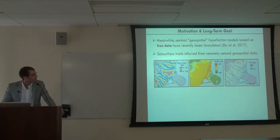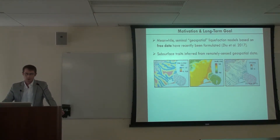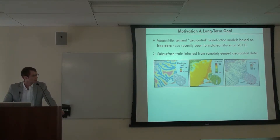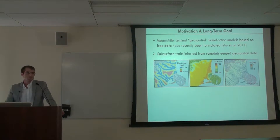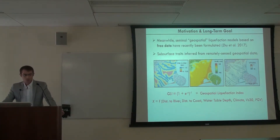Meanwhile, we have very seminal so-called geospatial models. Lurie Bays and colleagues developed these — they rely on geospatial parameters that are free and readily available, like VS30 derived from ground slope, the compound topographic index, and distance to rivers. We can name 30 more such parameters. When used in combination they can infer subsurface traits without in-situ testing. One example is the geospatial liquefaction index, which simply uses distance to rivers or coastline, water table depth, climate metrics, VS30, and an intensity measure — very simple, almost too simple to work, but quite intriguing.